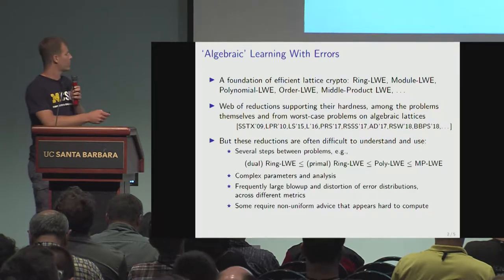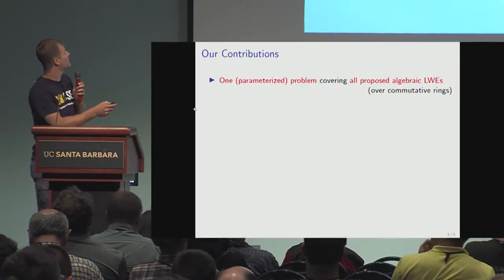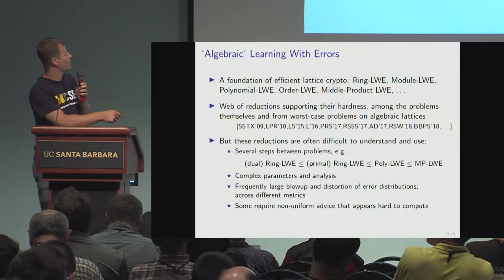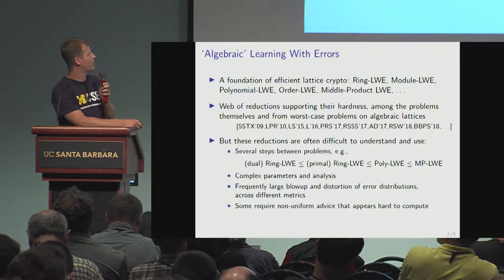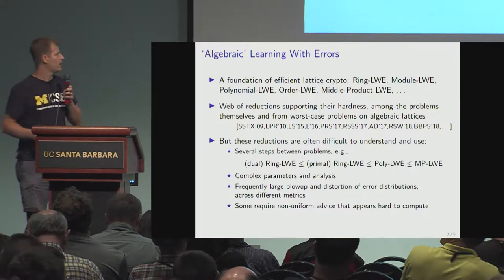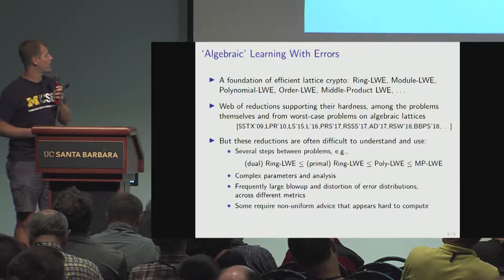One reason is you sometimes end up with several steps between reductions. To get from ring LWE to middle product LWE, you have to take a bunch of hops spread across two different papers, with lots of steps within each step. There's complexity there.